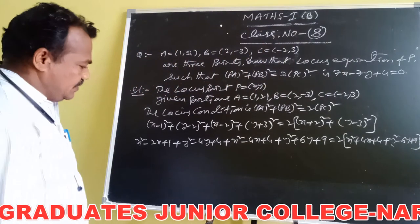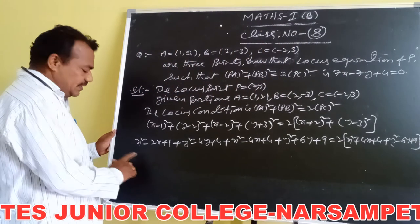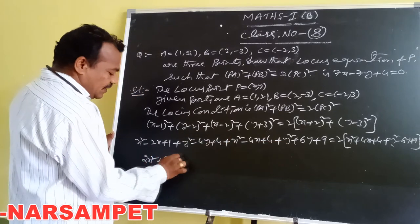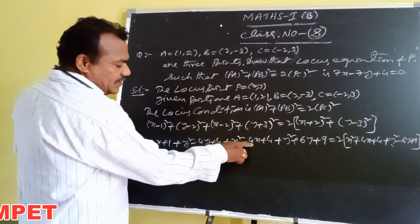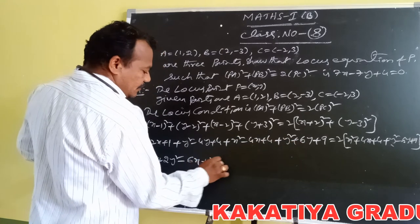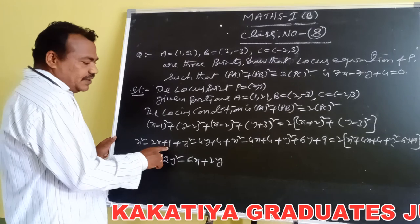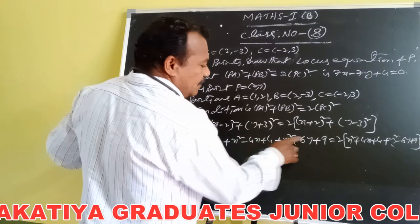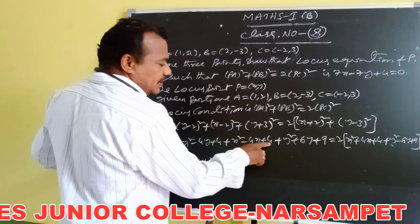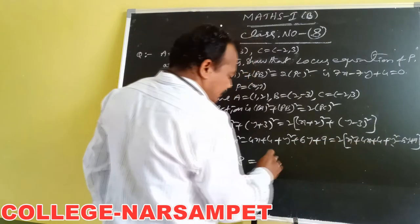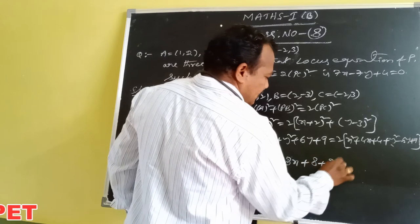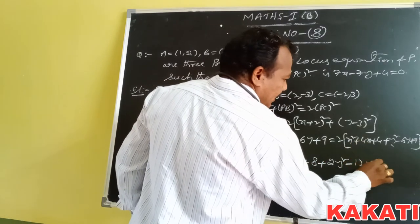Expanding the left-hand side: X minus 1 whole square gives X squared minus 2X plus 1; Y minus 2 whole square gives Y squared minus 4Y plus 4; X minus 2 whole square gives X squared minus 4X plus 4; Y plus 3 whole square gives Y squared plus 6Y plus 9. The right-hand side: 2 times X plus 2 whole square gives X squared plus 4X plus 4; Y minus 3 whole square gives Y squared minus 6Y plus 9. Multiplying through by 2 gives 2X squared plus 8X plus 8 plus 2Y squared minus 12Y plus 18.